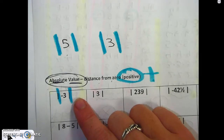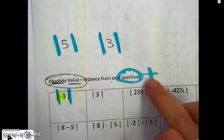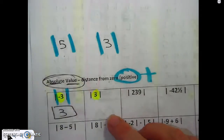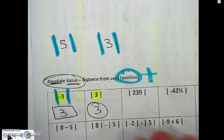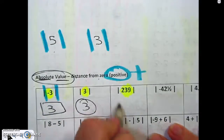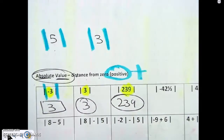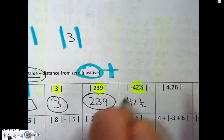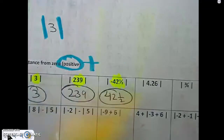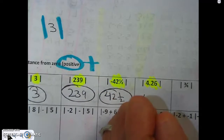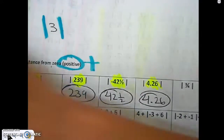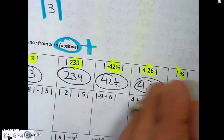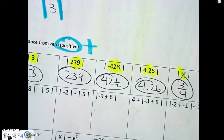So you just take that number right here and make it positive. Take that number, make it positive. Take that number, keep it positive. Take that number, no matter what it is, make it positive. All right, let's get to the second row.